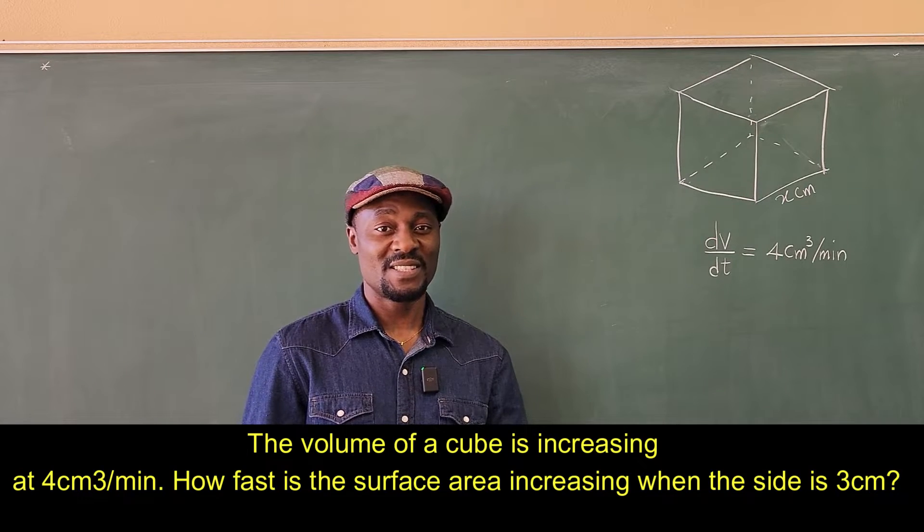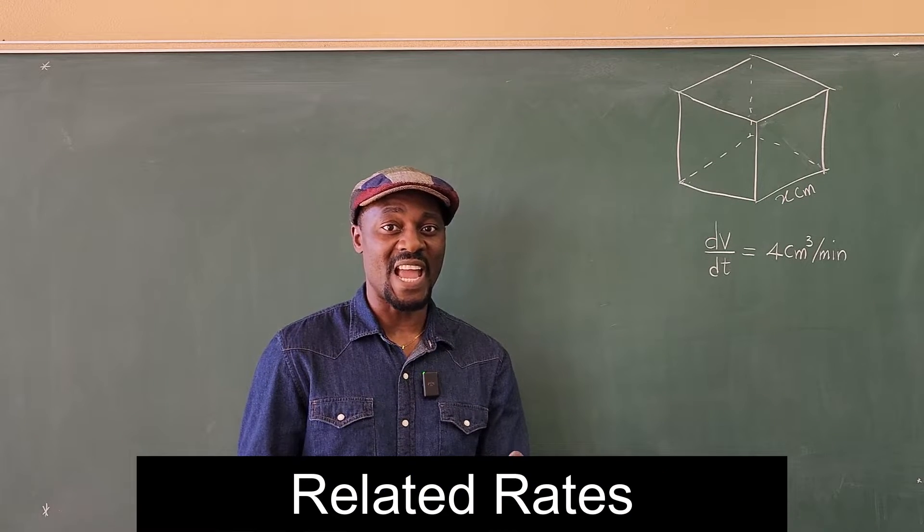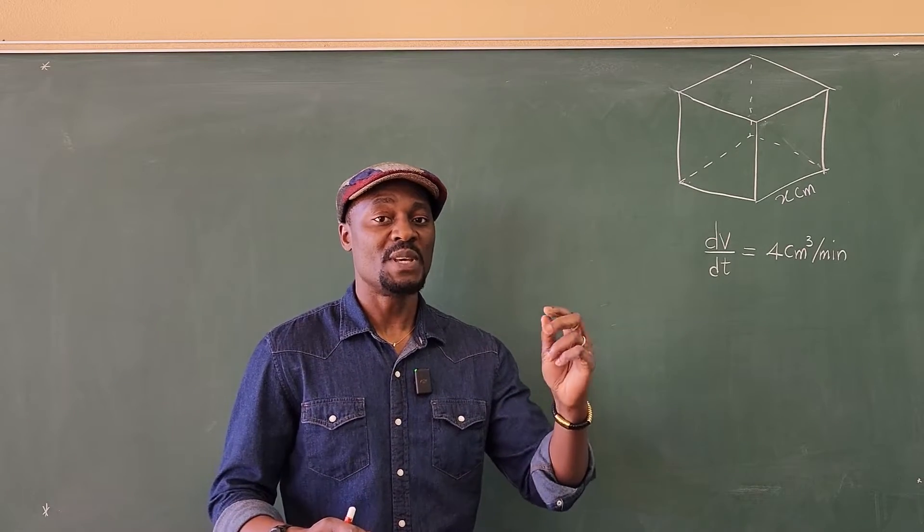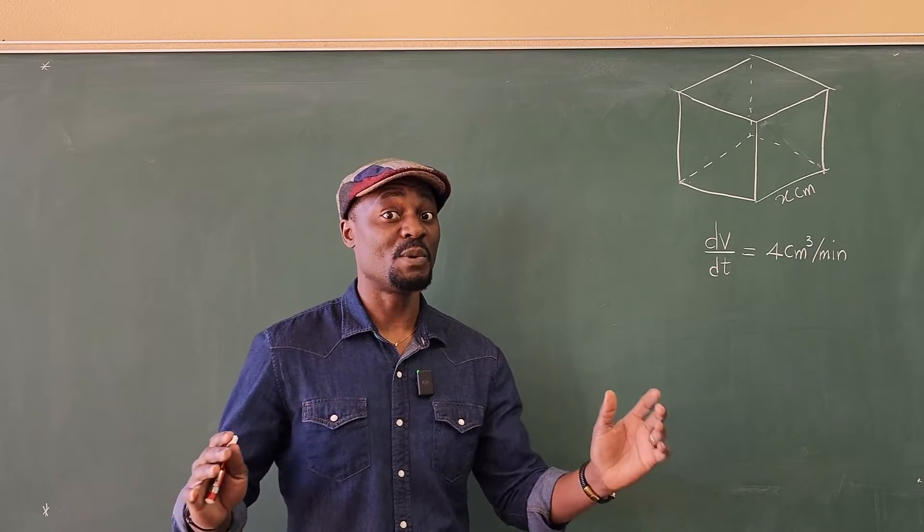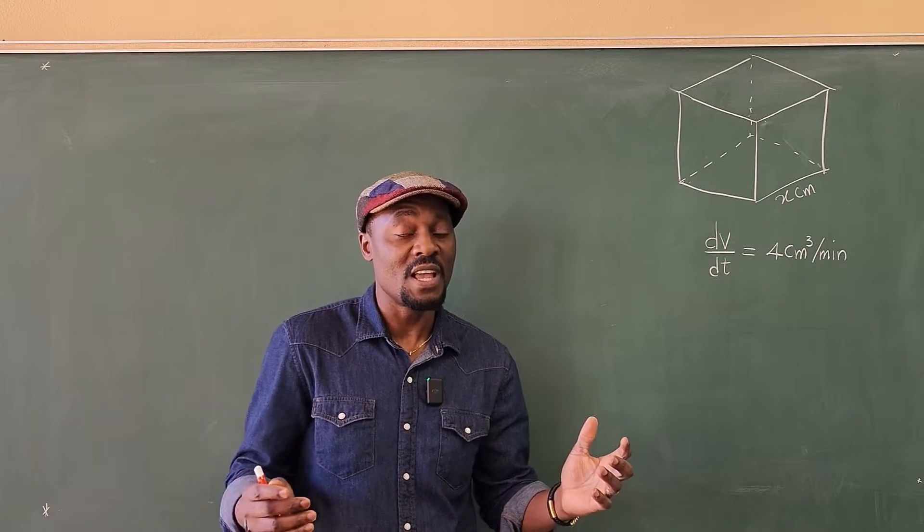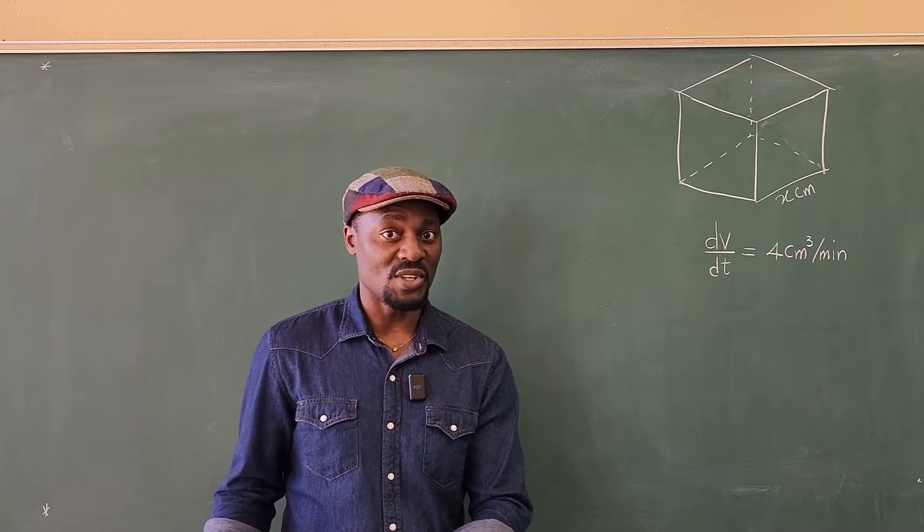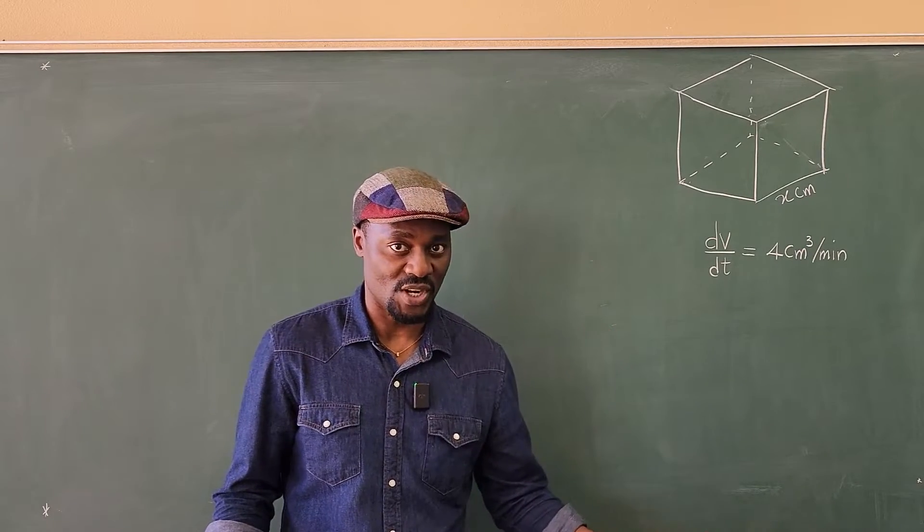Now this is the topic called related rates and every question in this section behaves the same way. You'll be given two things or three things, but usually two things that are changing. You'll be given the rate at which one of them is changing and asked to find the rate at which the other is changing.